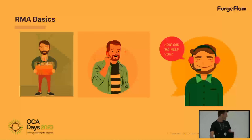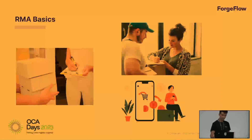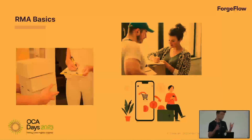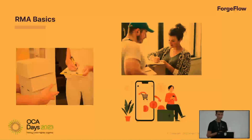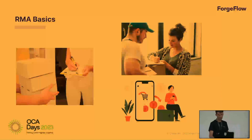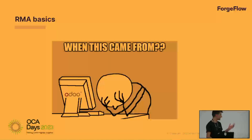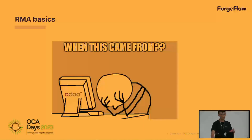We had tools in the community to create a document where you could do returns, refunds, and deliver back to the customer. That was fine, but there are many different requirements from different companies. We had to start thinking about evolving that application. For example, what if the sales order is not in Odoo — maybe you migrated from a different system or it was never entered? Why block the user from starting to enter an RMA? You shouldn't.